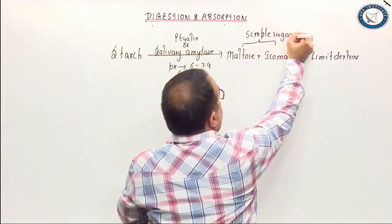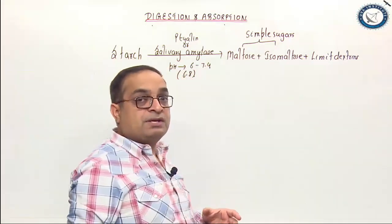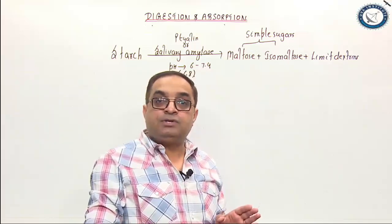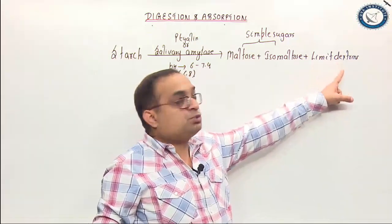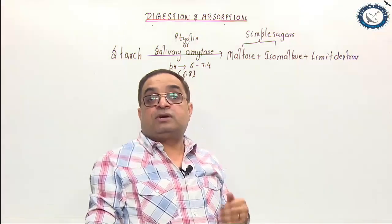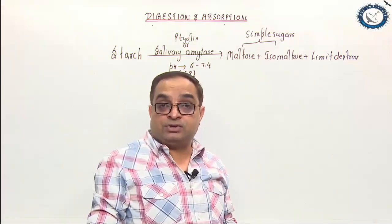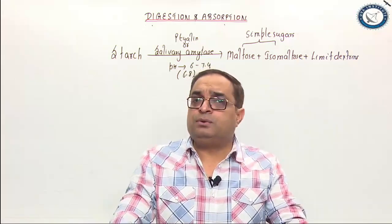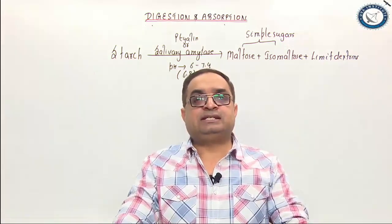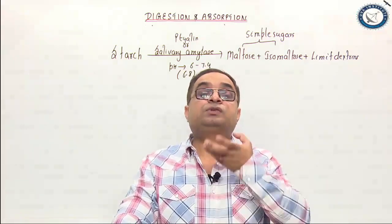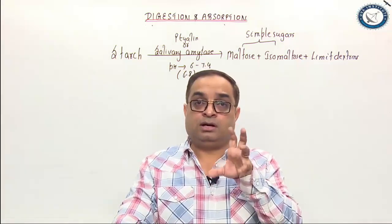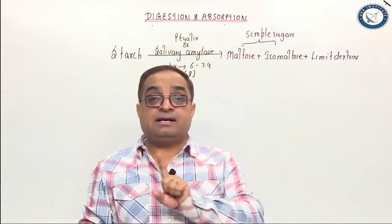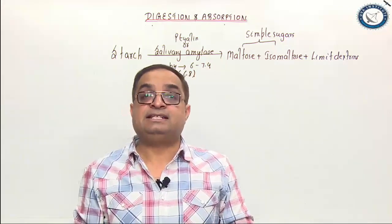Maltose and isomaltose are simple sugars. That is why when you chew bread for some time, it starts tasting sweet because of the formation of simple sugars. Limit dextrins are intermediate stages formed during partial digestion of starch. Because food is chewed for a short duration, only 3 to 5 percent of starch is digested in the buccal cavity. Then we swallow the food — the chewed food along with saliva as bolus — and the bolus passes through the esophagus.